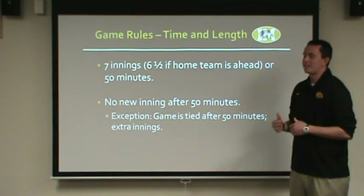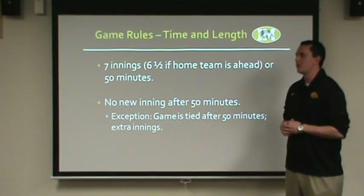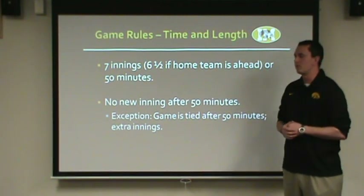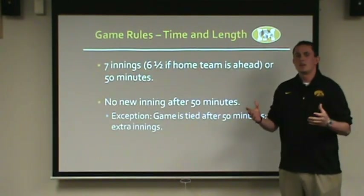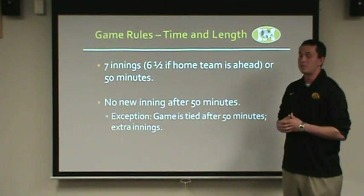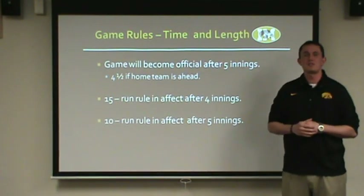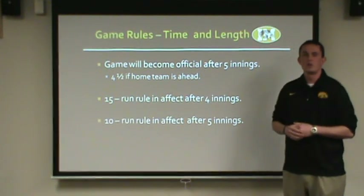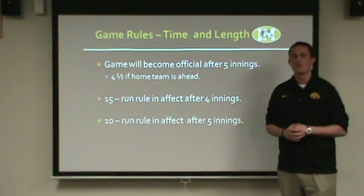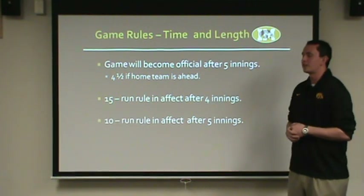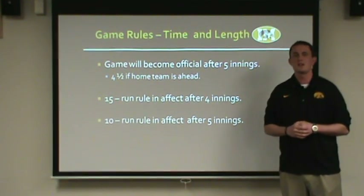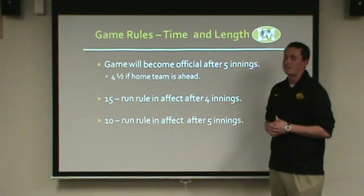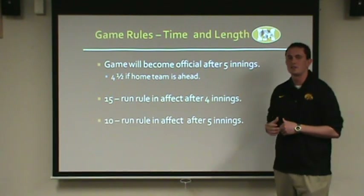The game will consist of seven innings — six and a half if the home team is ahead — or 50 minutes. No new inning will begin after 50 minutes. The only exception is if the game is tied at the end of 50 minutes; we will continue until an inning is completed with one team ahead. The game becomes official after five innings, or four and a half if the home team is ahead. There are mercy rules in effect: a 15-run rule after four innings, and if a team is ahead by 10 or more runs after five innings, the game is stopped.